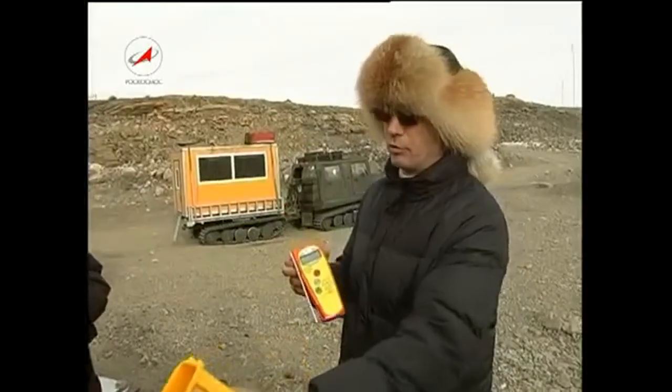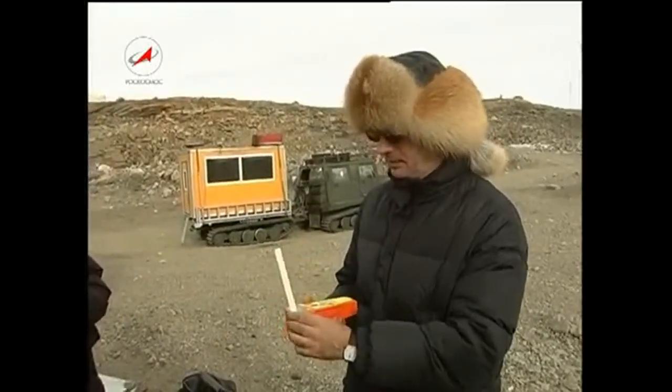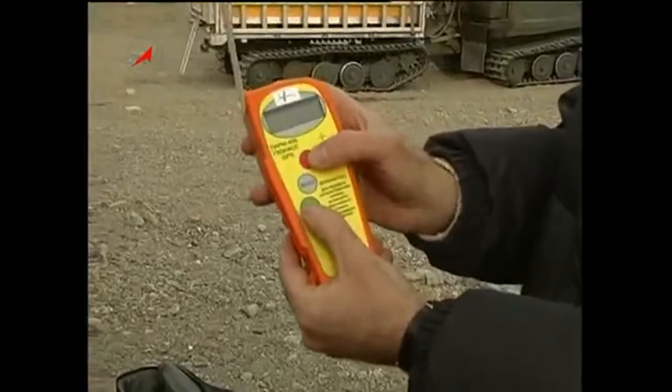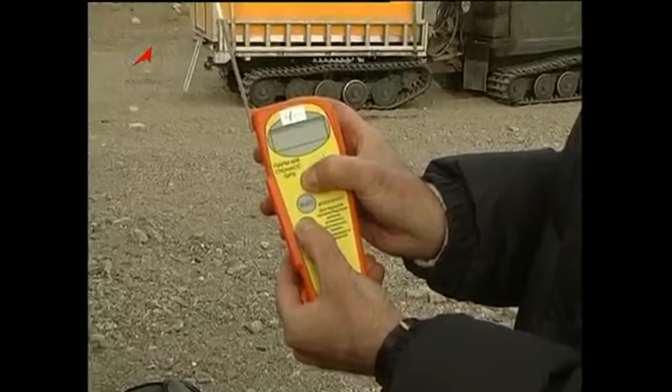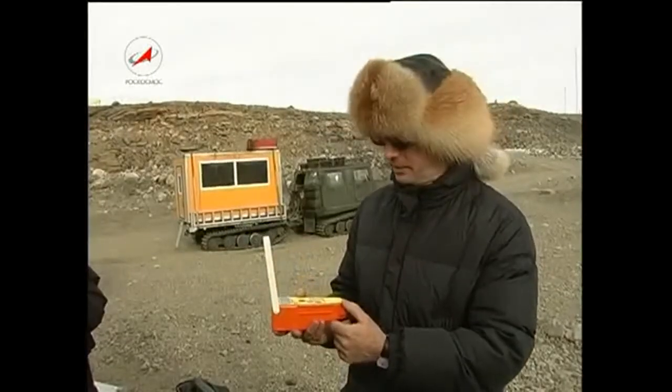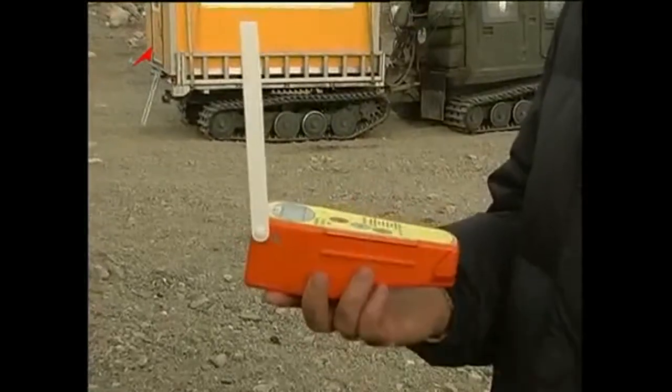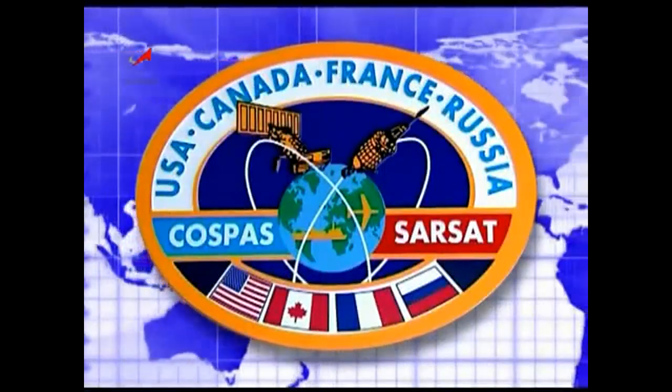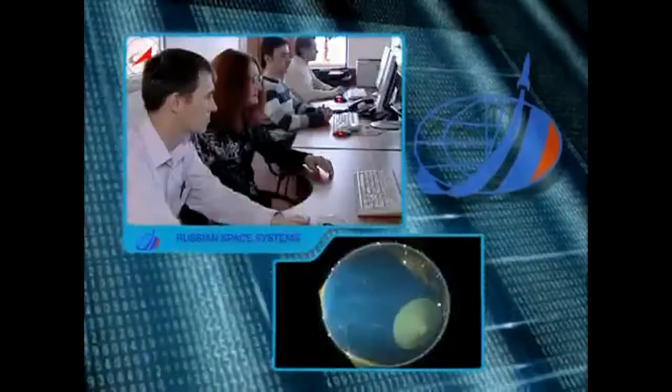The personal radio buoy of COSPAS-SARSAT system is equipped with a GLONASS GPS receiver in order to increase the exactitude characteristics in defying each accident's coordinates. Forty-five countries officially participate in the COSPAS-SARSAT program. With its aid, more than 100 people are rescued monthly around the globe.